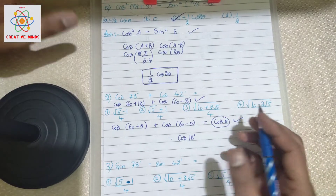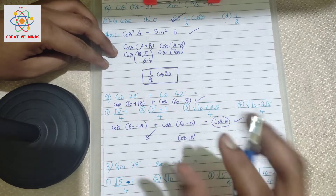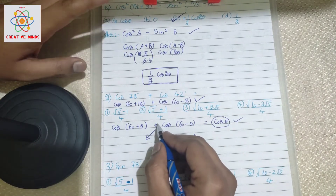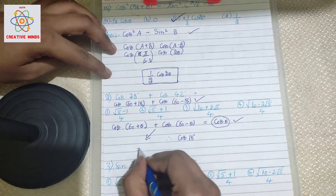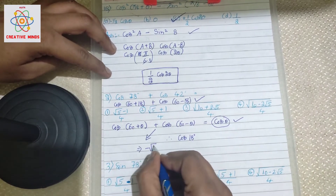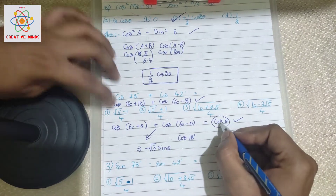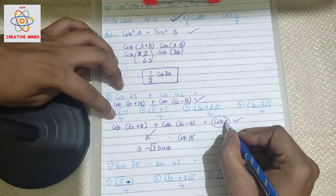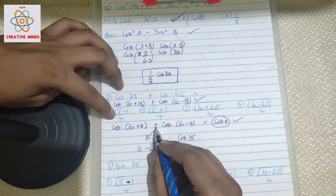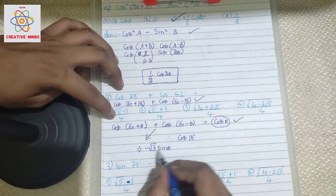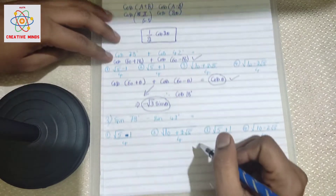Now, for the same format but with a minus sign instead of plus — cos(60° + θ) minus cos(60° - θ) — the final answer would be minus √3·sinθ. So there's a small change depending on the sign used in the question.